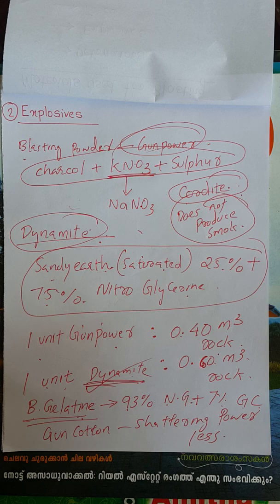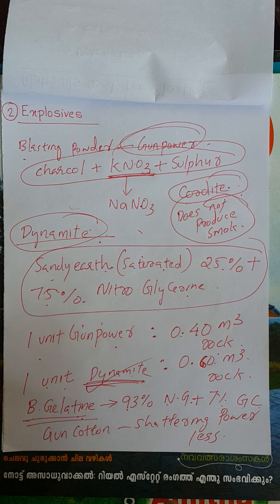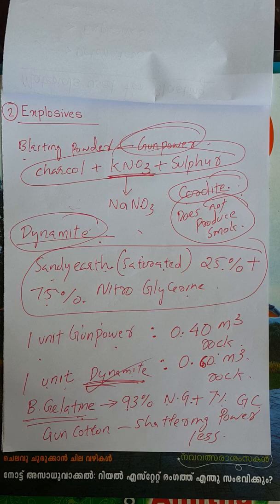If you want to use it as liquid oxide, it is used for large-scale carbon dioxide blasting. For underwater use, you would use rock-a-roke, which contains 79% potassium chloride and 21% nitrobenzole.